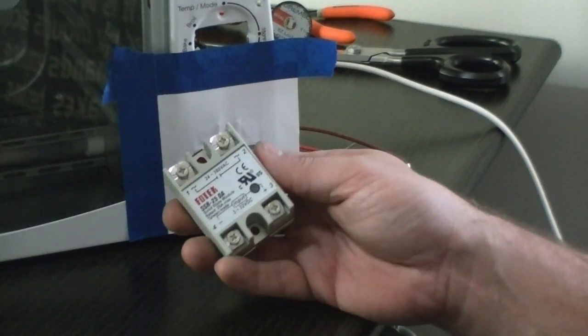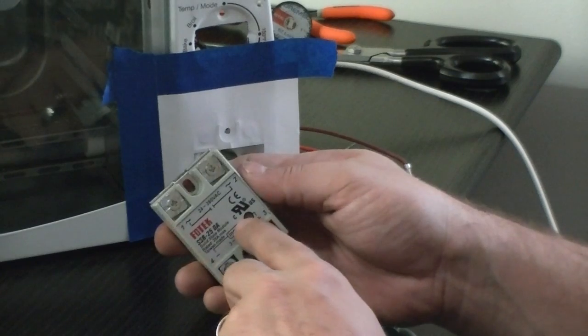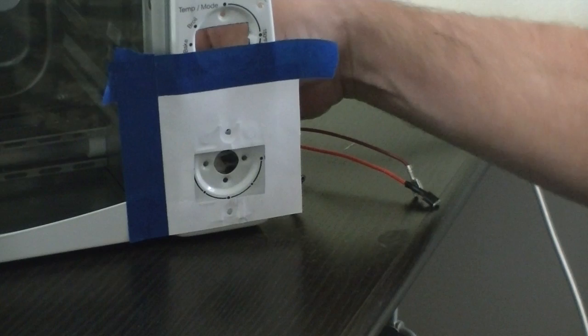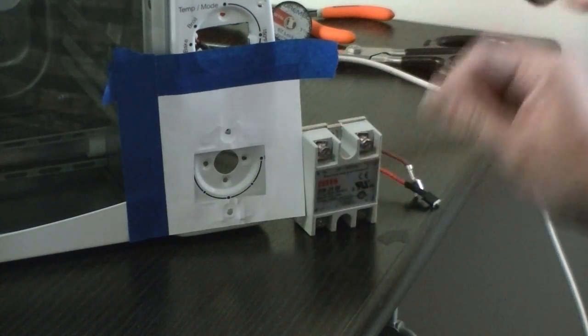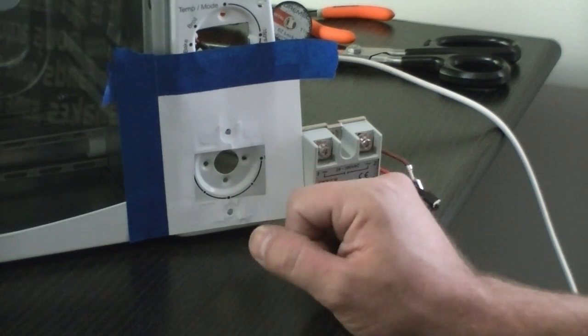Now on the solid state relay, there's actually an LED on here that will tell you when it's active and when it's not. So I'd actually want to mount this so that I can see it from the front and I can actually see when it turns on and off. So I made a template for that as well, now I'm going to trace it and we'll cut this one out.